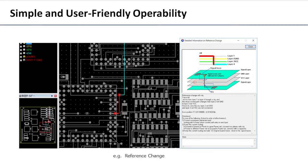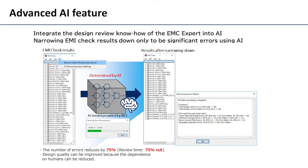As for EMI Check results, errors are highlighted and zoomed. At the same time, descriptions of the errors and advice on preventing them make it easy to recognize defect points. Correcting the layout according to the provided advice makes it easy to prevent EMI. An AI feature, which has learned EMC Consultant's specialist knowledge, also enables you to narrow down to the most important errors, enabling error screening and countermeasures equivalent to those employed by EMC experts.